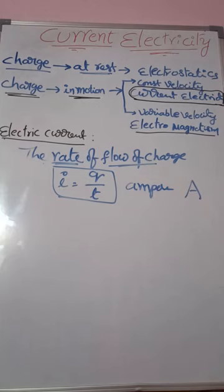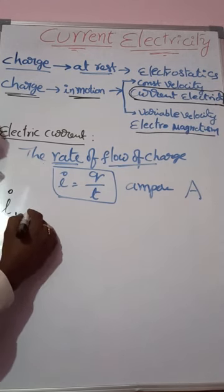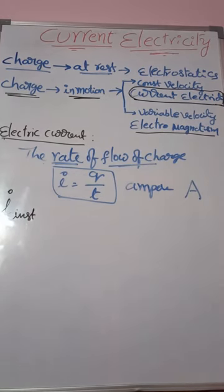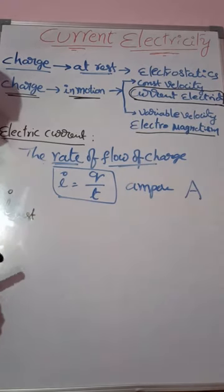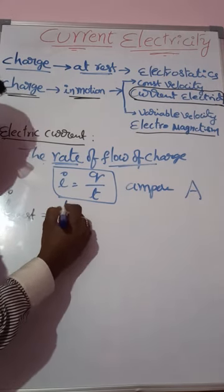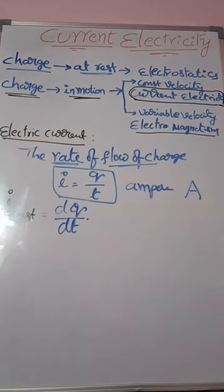In electric current, we will also learn about instantaneous current. Instantaneous current is the amount of charge passing through a conductor at a particular moment. It is represented as i_instant = dQ/dt.